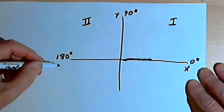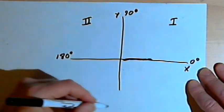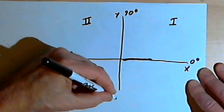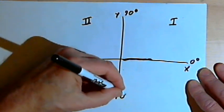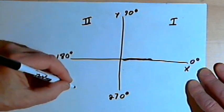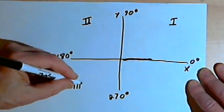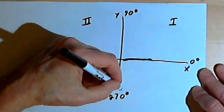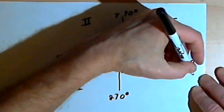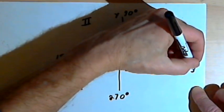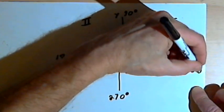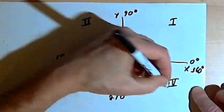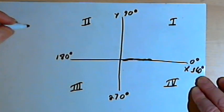After that, the next 90 degrees will go through the third quadrant up until 270 degrees. And after that, up until 360 degrees, we'll be in the fourth quadrant.